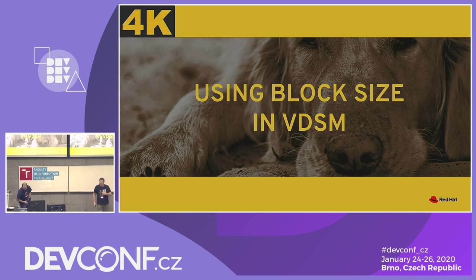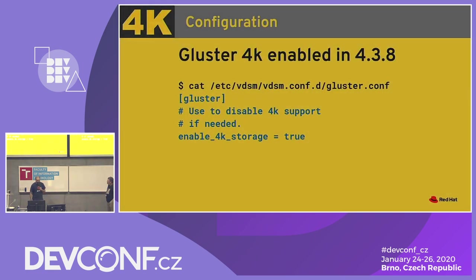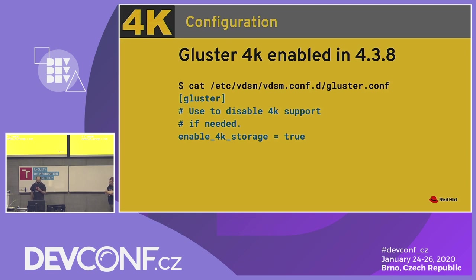Vojta will now explain how we use all this information. Before trying to use 4K storage in VDSM, you first have to enable it. In recent versions this is enabled by default. But if you run older versions, you have to enable it manually in vdsm.conf or gluster.conf by setting enable_4k_storage to true. This option is also useful if you have any issues and want to disable 4K support.